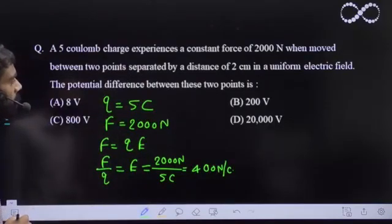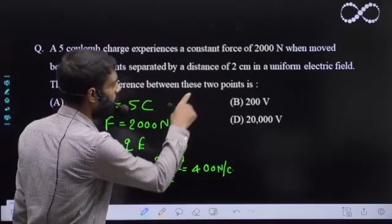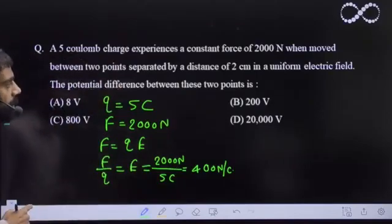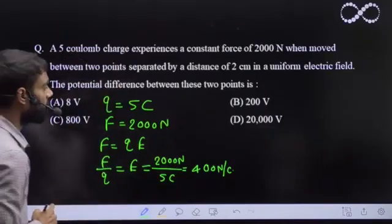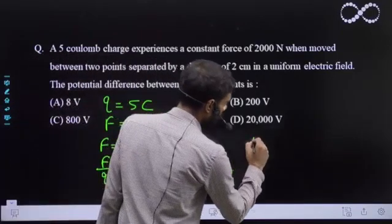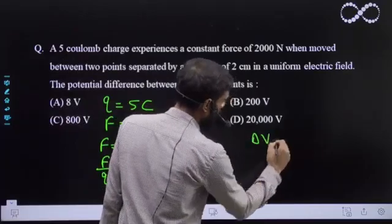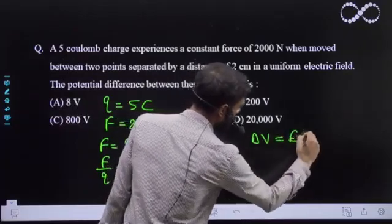It is saying the potential difference between these two points. So there are two points and the distance between them is two centimeter and we need to find the potential difference between these two points. So we can apply the formula delta V is equal to E into d.